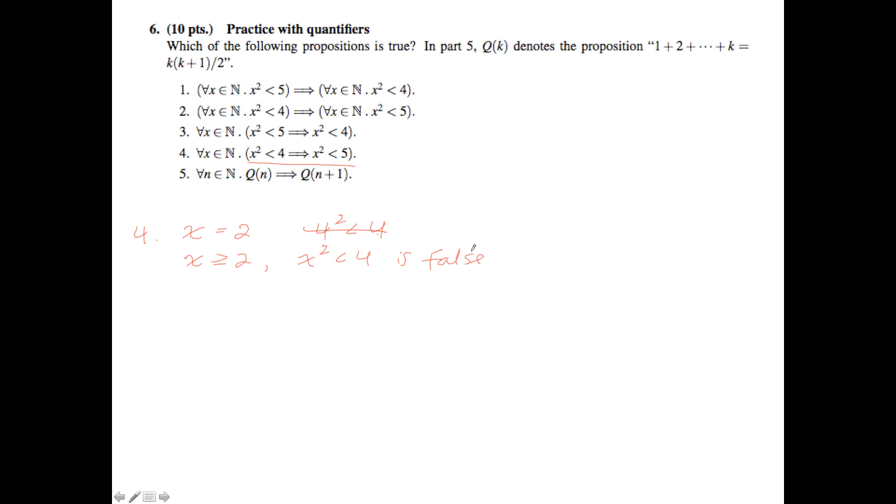And in fact it's going to be false for X greater than or equal to 2. X squared less than 4 is false. So we don't need to worry about those cases. And we know, basically from common sense, that if we see X squared less than 4, we know that that's going to be less than 5. So X squared less than 5. So wherever X squared is less than 4, we also know that it's guaranteed that X squared is less than 5. Therefore proposition 4 is true.